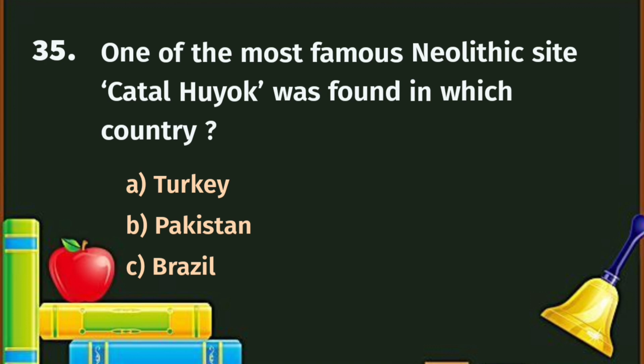Question number 35. One of the most important Neolithic sites, Katal Huyok, was found in which country? A. Turkey, B. Pakistan, C. Brazil. The correct answer is A - Turkey.